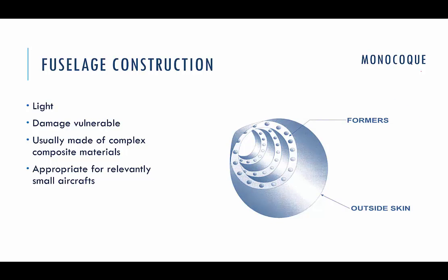This is monocoque — a newer type of fuselage construction. The fuselage is made of an outside skin supported by formers. The skin of a monocoque is stressed and takes all loads that the aircraft experiences during operations. This type of construction is light, but the most negative side is that local damages of this fuselage can cause severe weakening of its structural integrity or even total collapse of the aircraft.